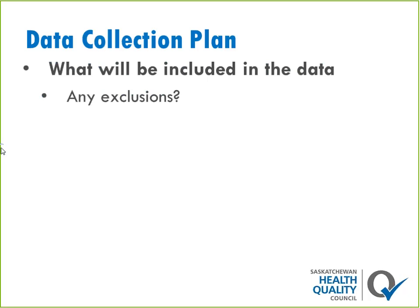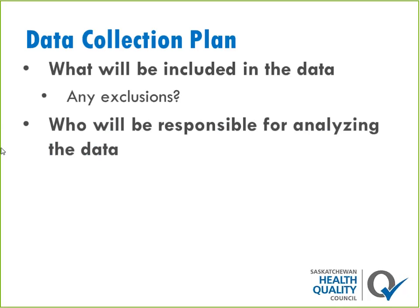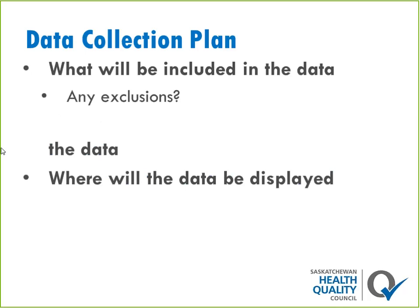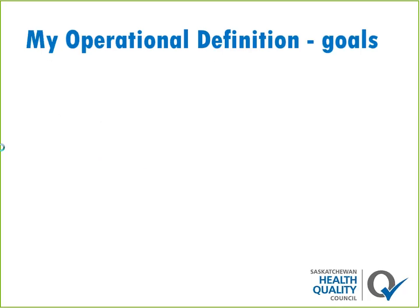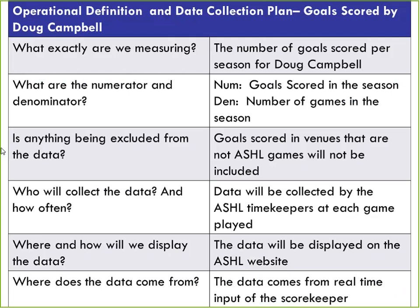You need to look at what will be included in the data — are you excluding anything? And who will be responsible for analyzing the data and where will it be displayed? Going back to the hockey example, here's what the operational definition and data collection plan might look like combined. Measuring goals scored: the number of goals scored per season for me. Numerator: number of goals scored in the season. Denominator: number of games in the season. Excluding goals scored outside ASHL games. Data collected by timekeepers at the game, displayed on the ASHL website. Data comes from the scorekeeper at those games.